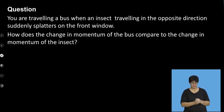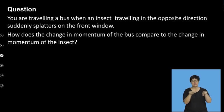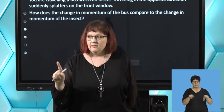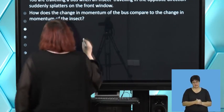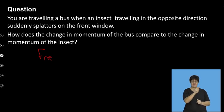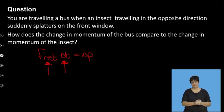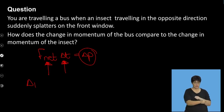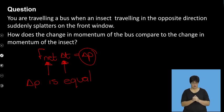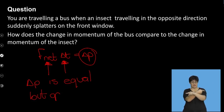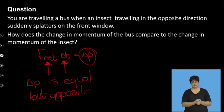Then they say: how does the change in momentum compare? If they experience the same force, they must experience the same change in momentum. Remember, impulse equals F net delta T equals change in momentum. They're experiencing the same force for exactly the same amount of time, which means delta P is the same. So change in momentum is equal but opposite in direction.